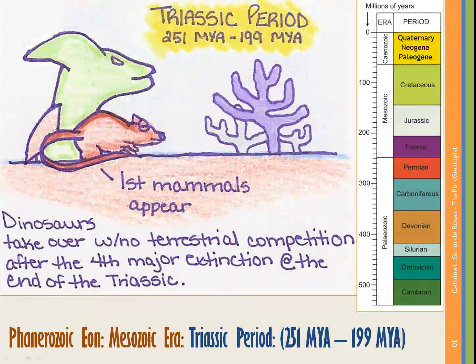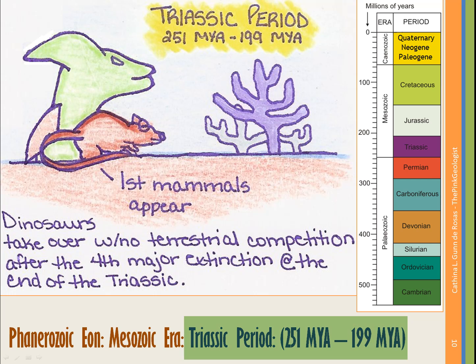As we move out of the Paleozoic Era, we move into the Mesozoic Era, the second era of the Phanerozoic Eon. The Mesozoic covers from about 251 million years ago to about 65 million years ago — a number familiar to just about anybody watching this. The first period in the Mesozoic Era is the Triassic Period, from about 251 million years ago to about 199 million years ago.